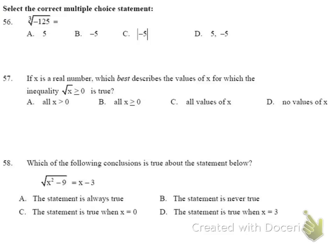For the multiple choice section: number 56, the cube root of negative 125 — what cubed gives negative 125? That's negative 5, so the answer is B. Number 57: which values of x make the square root of x greater than 0 true? Square roots require non-negative values to give real numbers; imaginary results are excluded. Only values where x is greater than or equal to 0 work, so the answer is B.